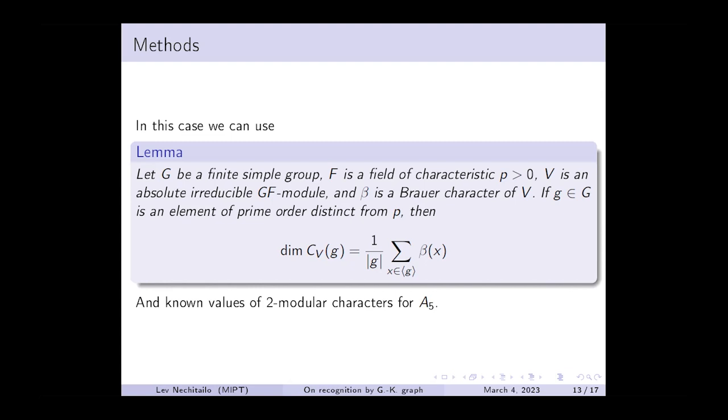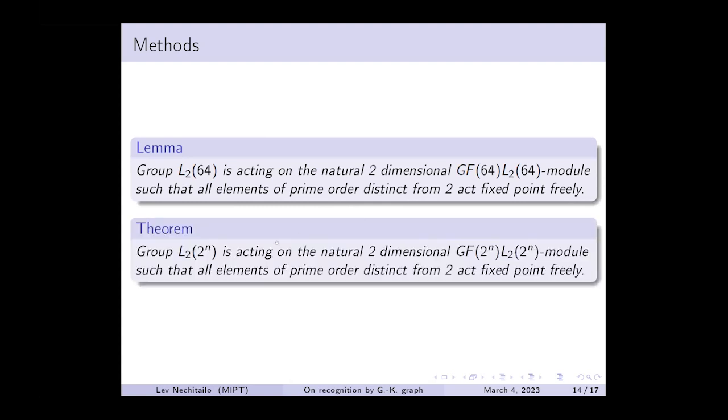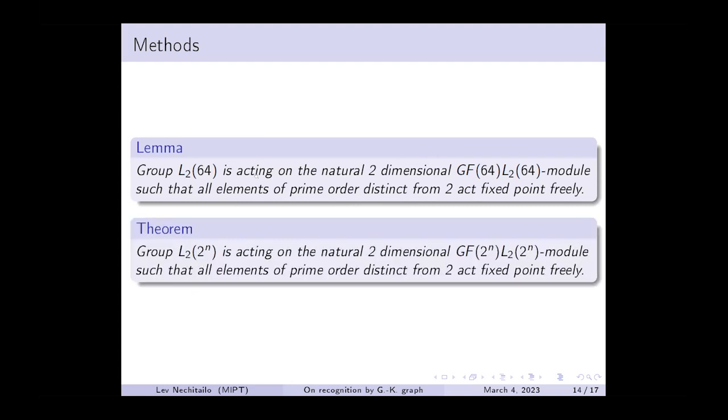But it is not the only way to construct an example. For small groups, it's a quite useful and easy way to construct an example of a group with a non-trivial solvable radical, but it's not the only way. For example, for the group L2(64), there is a natural two-dimensional GF(64) L2(64) module such that all elements of prime order from L2(64) act on this module fixed-point freely. And the semidirect product has the same Gruenberg-Kegel graph as L2(64). And actually, it is not hard to show that it holds in general case for this series of groups.